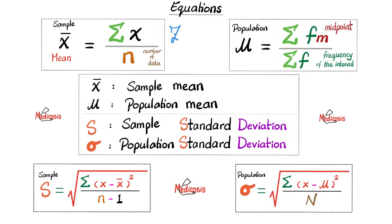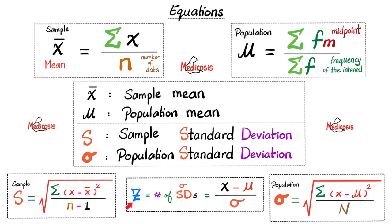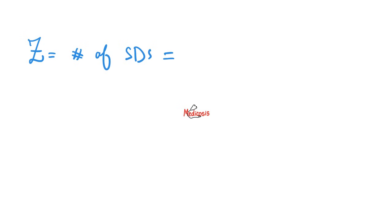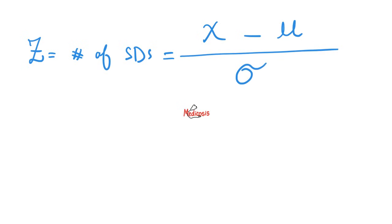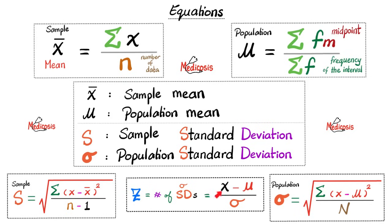Today we're talking about the z-score, which equals the number of standard deviations. If we are two standard deviations above the mean, the z-score is positive two. If we are three standard deviations below the mean, the z-score is negative three. The z-score equals the value of concern minus the mean of the population, divided by the standard deviation of the population. The z-score could be negative or positive.